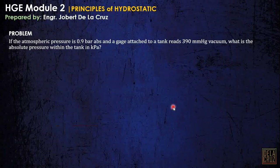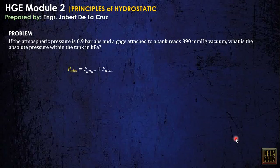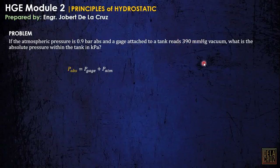How about this: if the atmospheric pressure is 0.9 bar absolute and the gauge attached to the tank reads 390 mmHg vacuum, what is the absolute pressure within the tank in kilopascal? We have the atmospheric pressure and the gauge pressure of 390 mmHg vacuum. We are looking for the absolute pressure in kPa.